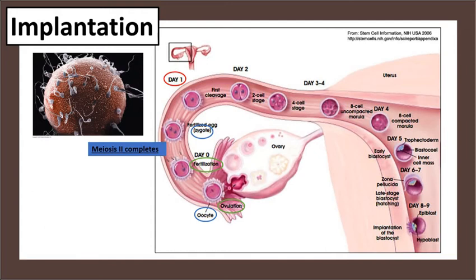This oocyte is traveling by cilia in the fallopian tube, just gently moving it along. Sometime between day one and day two, the cell will start dividing and baby will start growing. It divides and keeps on dividing, and you have a ball of cells. By day four you have what is called a morula — it sounds like something out of a sci-fi movie, but that is the name of the ball of cells, and it takes four days since ovulation to reach that point.